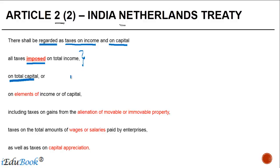Any tax which is imposed on total income or any tax which is imposed on total capital. What is the meaning of income here? Generally, the word income is not defined in the treaty. Therefore, for Indian income tax purposes, you can consider the definition given in Section 2, subsection 24, of the Income Tax Act for the purpose of ascertaining what taxes are imposed on total income.